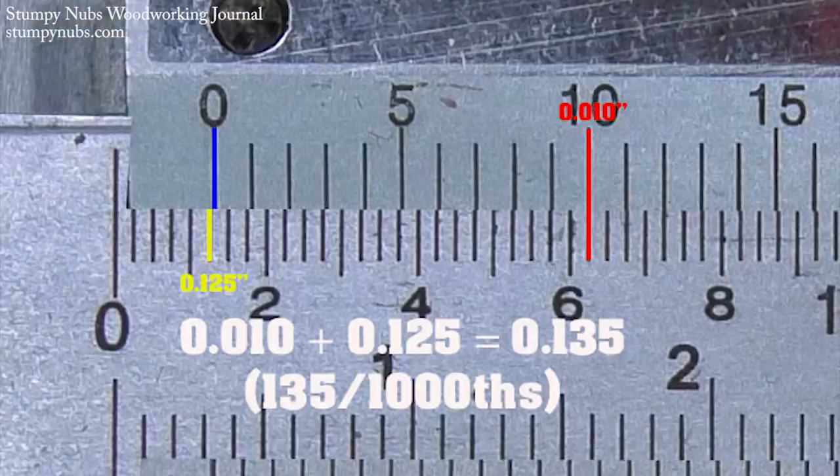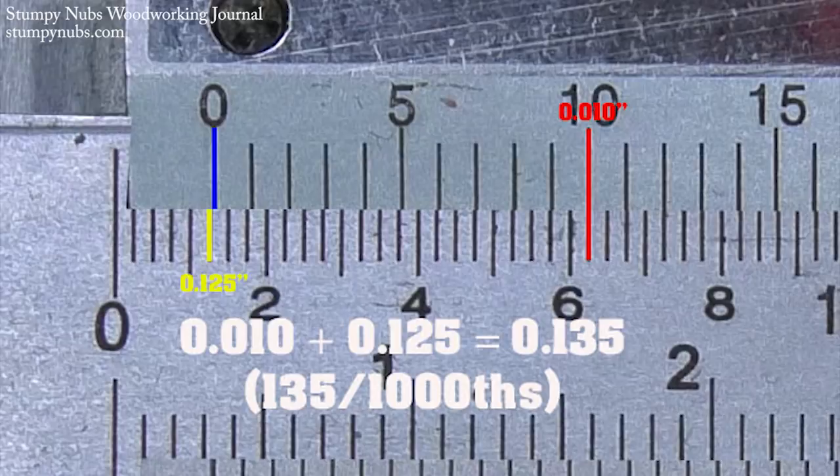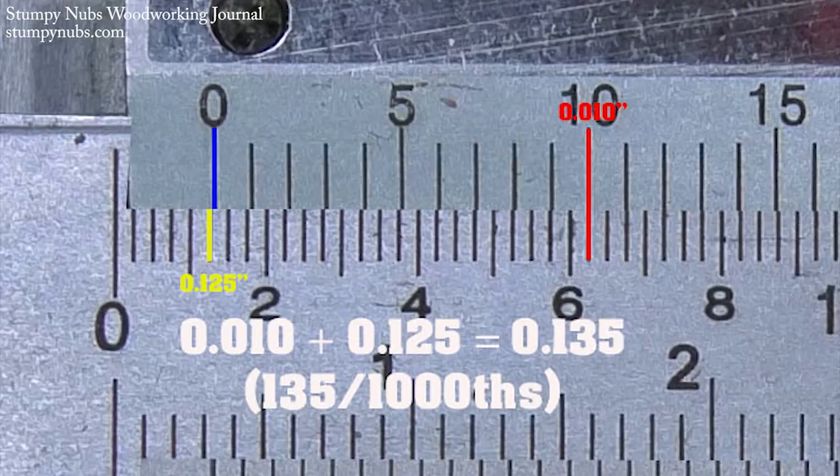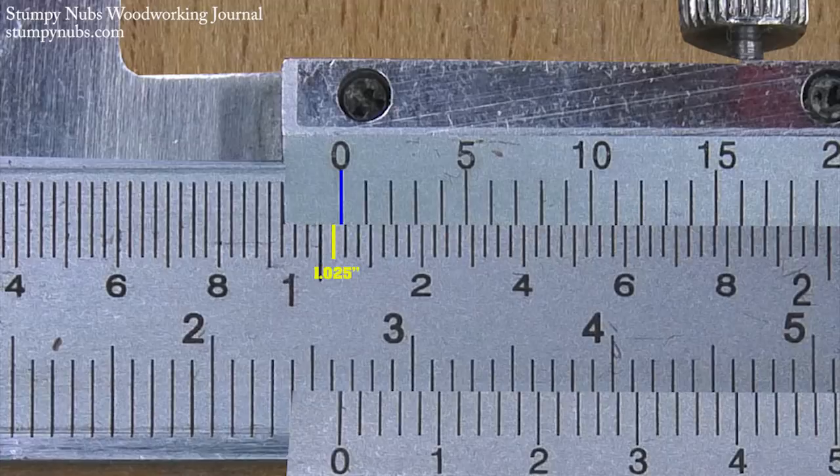The line on the upper scale that matches up best is ten. So add ten thousandths or point oh one oh to the point that your zero cursor has just passed on the main scale, which was point one two five, and you'll have a more precise measurement of point one three five or a hundred and thirty-five thousandths. Want to try another one?